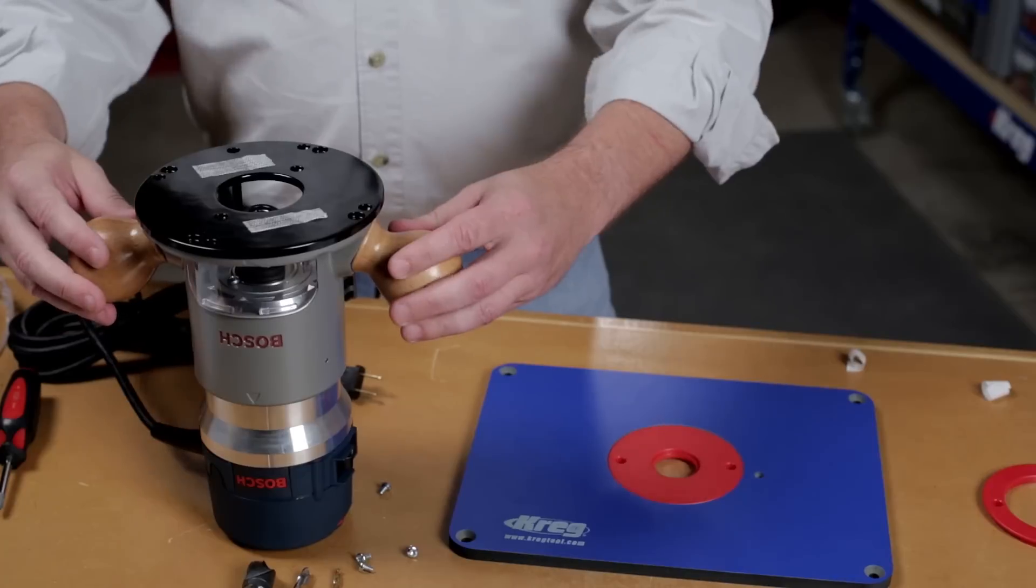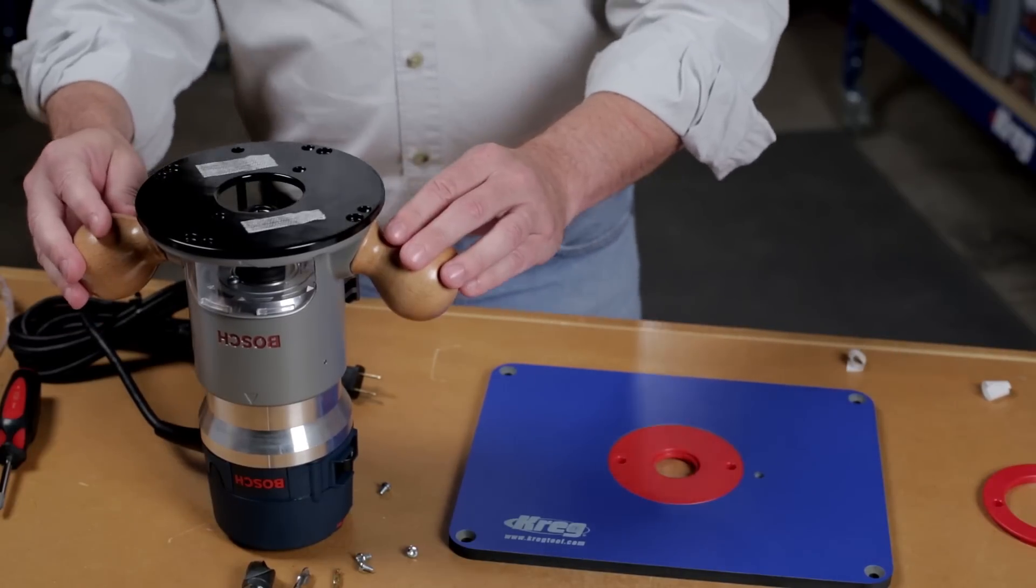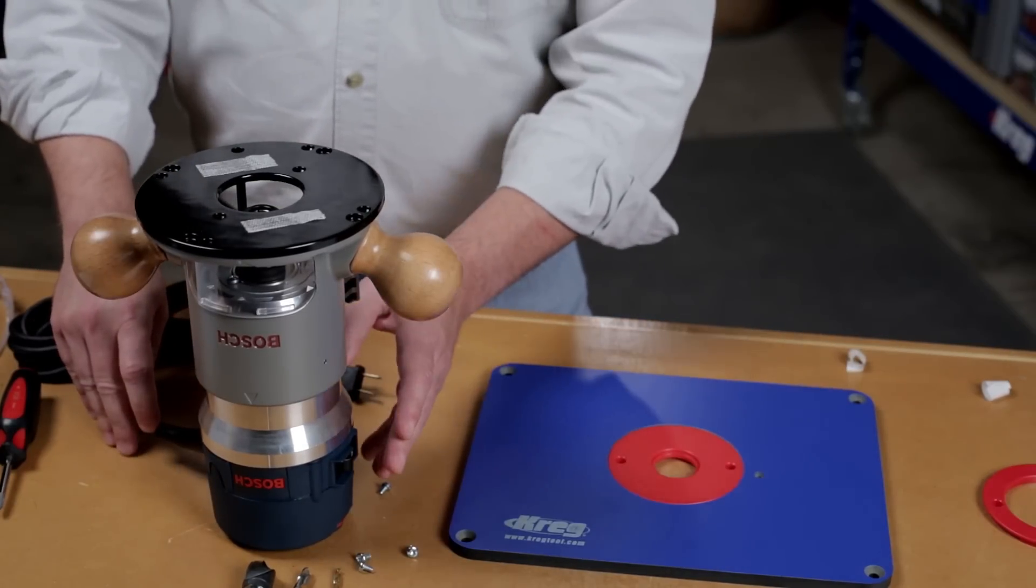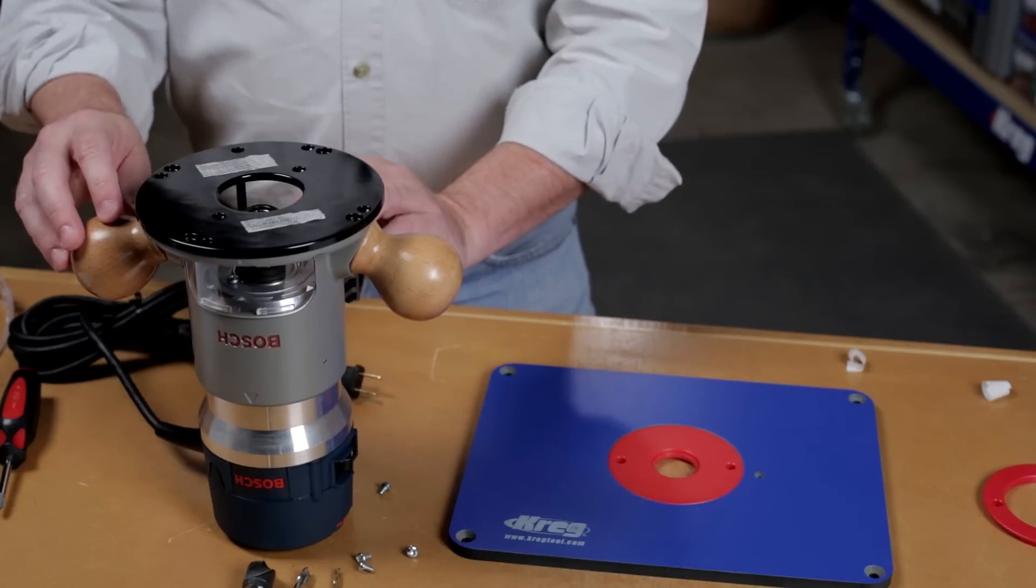Now turn the router so it's squared up like you think it would be in the router table, and make sure you have access to the power switch and all the adjustments.